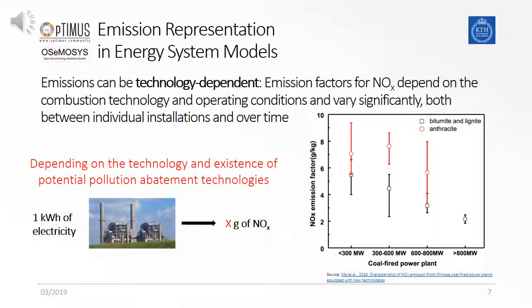If we consider the emissions as technology-dependent, then the emission factor depends highly on the combustion technology and on the operating conditions. This means the emission factor can vary significantly, both because of individual situations and over different usage over time. For example, when we produce one kilowatt-hour of electricity, we have an amount of x grams of nitrogen oxides.